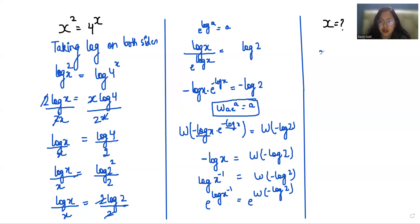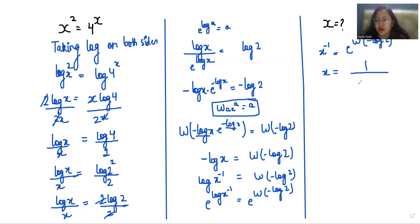So x minus 1 equals e to the power W of negative log 2. To find the value of x we are going to take the reciprocal, so x equals 1 over e to the power W of negative log 2. This is the value of x.